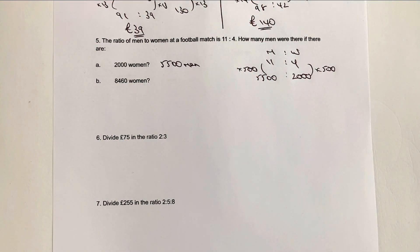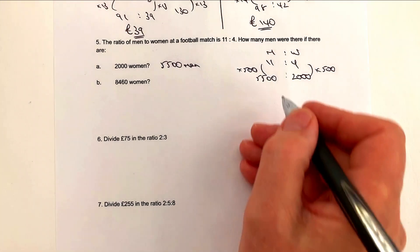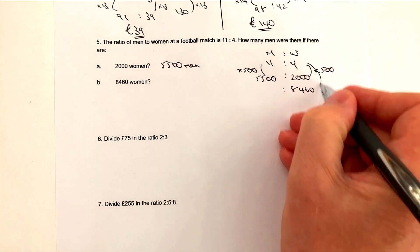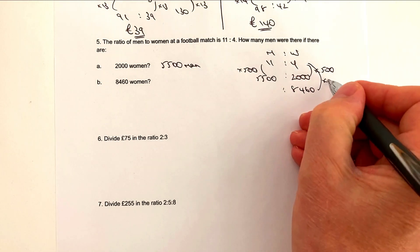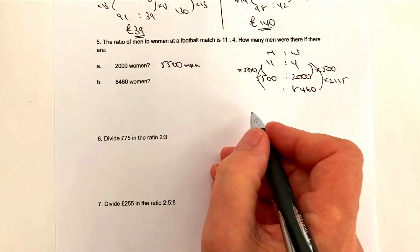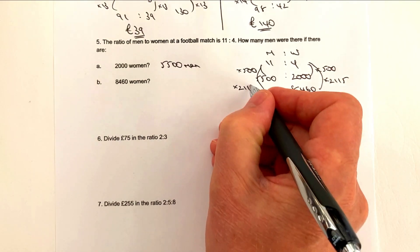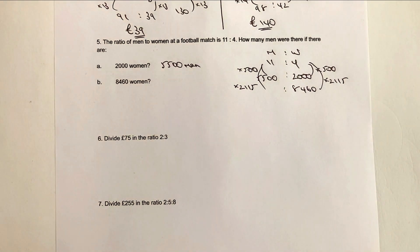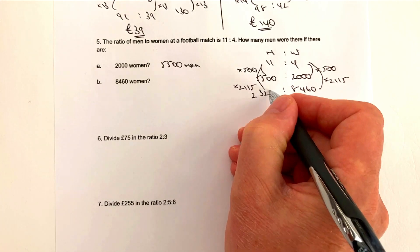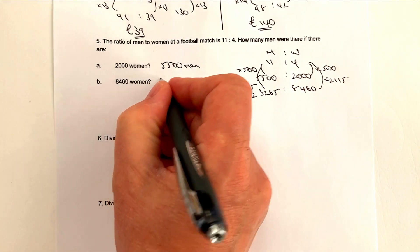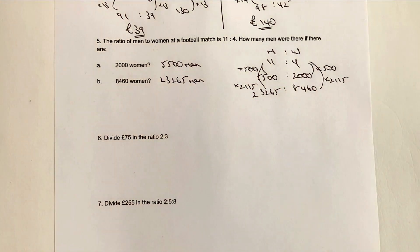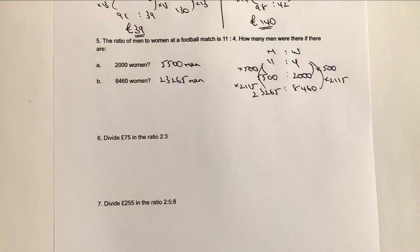Let's have a look at the next bit then, 8,640 women. Well, as I mentioned, arguably, this is where a calculator would come in. But you could work out, just using short division, that this is multiplied by 2,115. So then we've got to do 11 times 2,115. It seems like a big number, but it is calculable. And that's going to give you 23,265. So in this particular case, 23,265 men at this particular match. Hopefully that's okay for you.